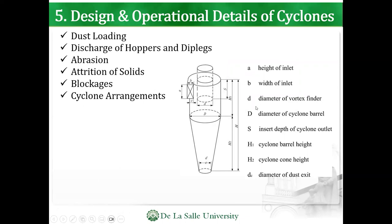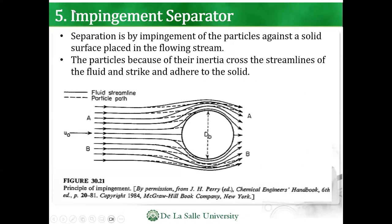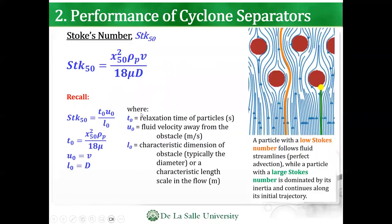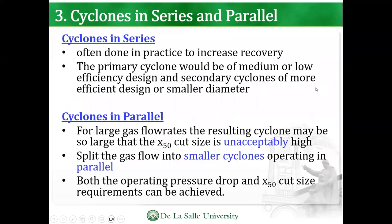For impingement separation — I'll leave the sizing details to you as it's in McCabe — separation is by impingement of the particles against a solid surface in the flowing stream. The particles, because of their inertia, cross the streamlines and strike and adhere to the solid. When the Stokes number is low, particles follow the streamlines; but when the Stokes number is high due to high velocity, they impact the particles or surface in front of them.